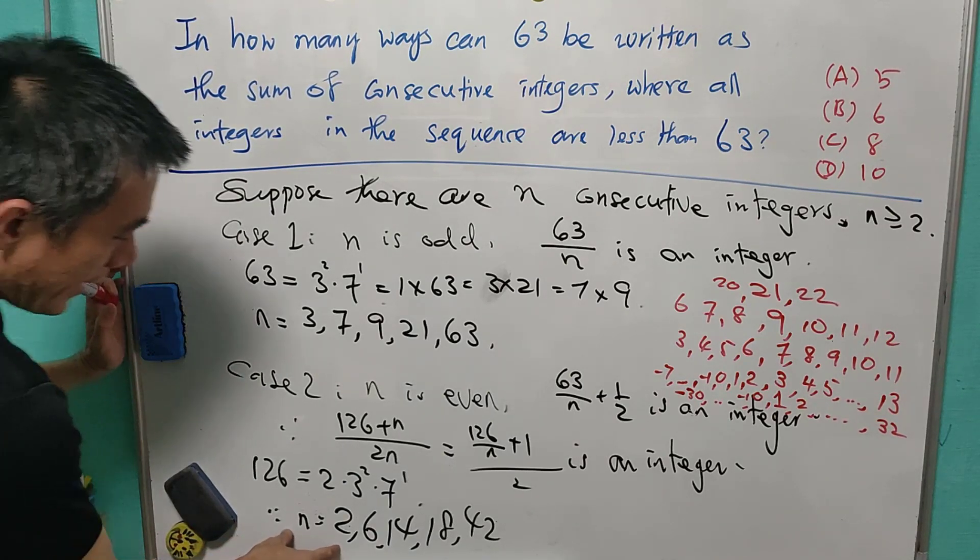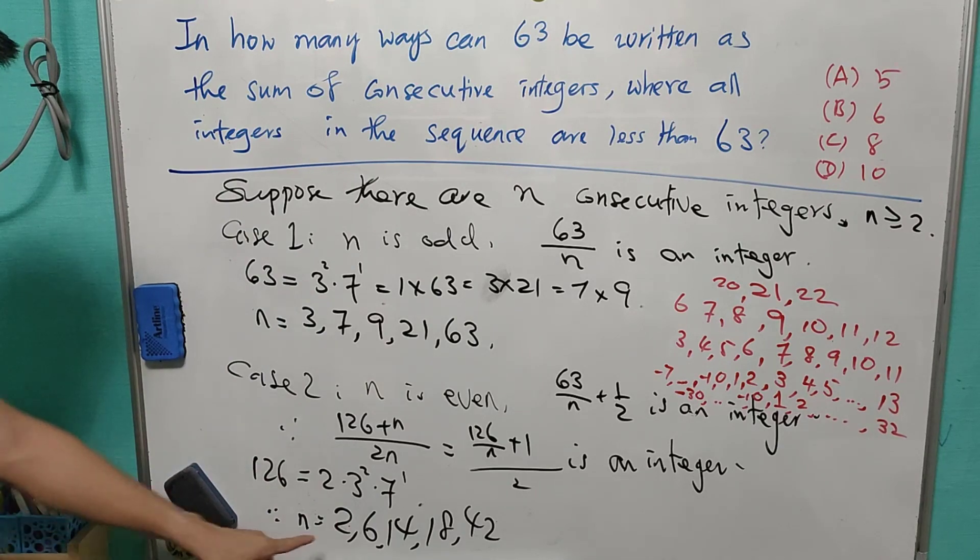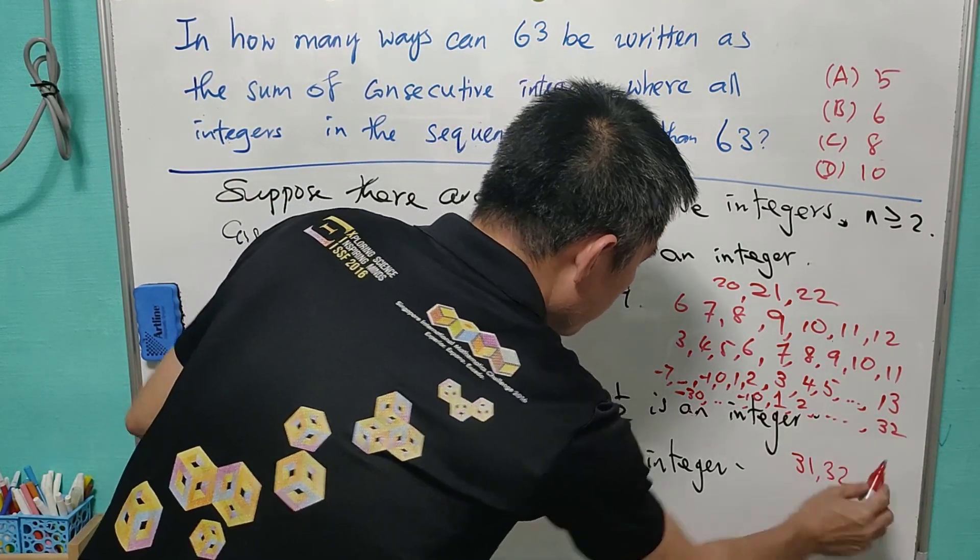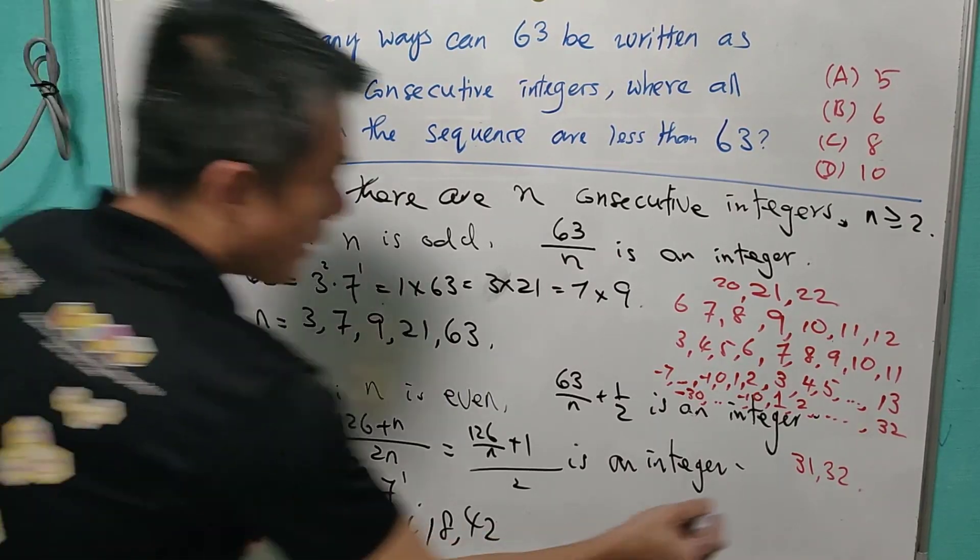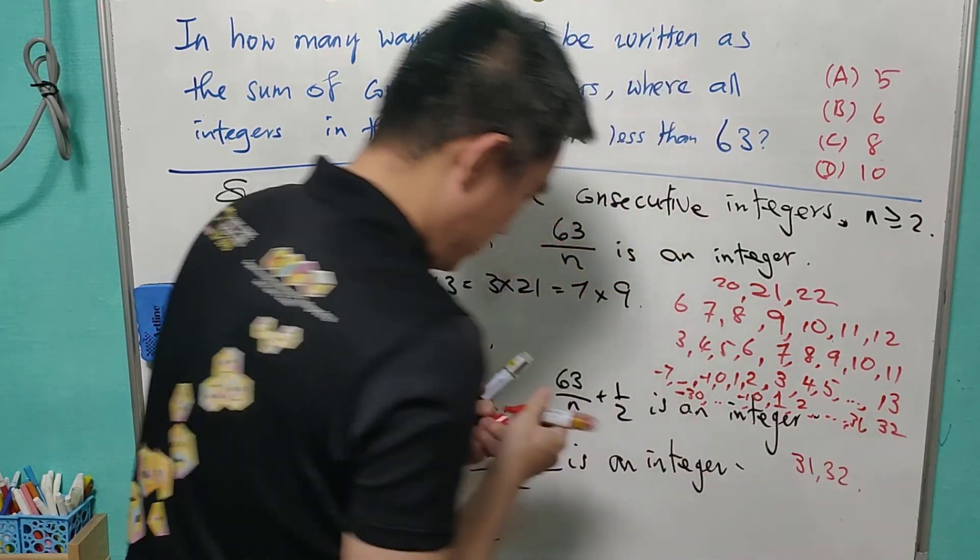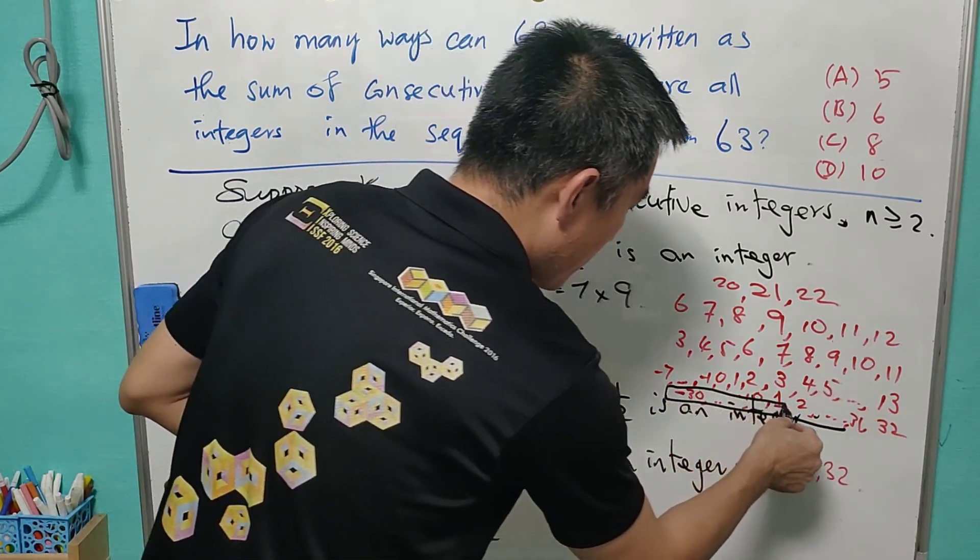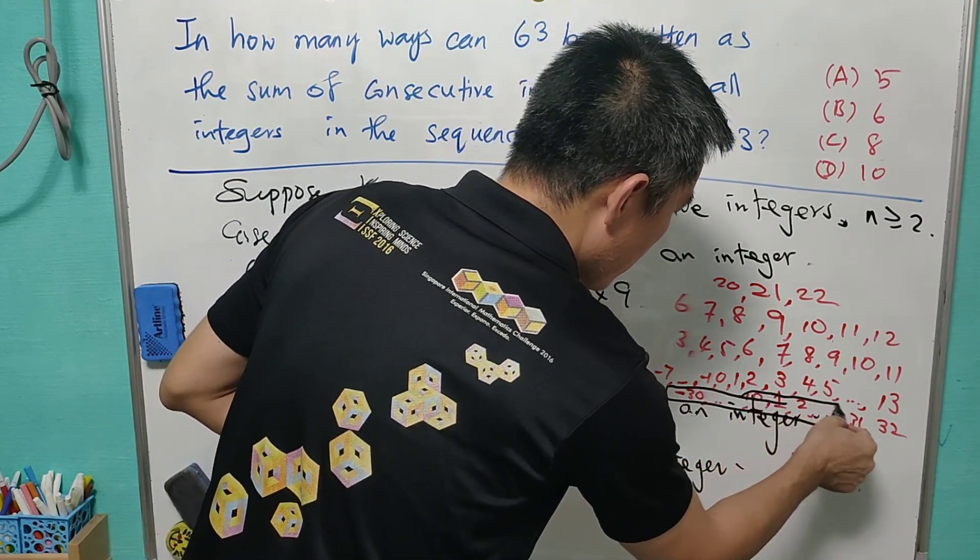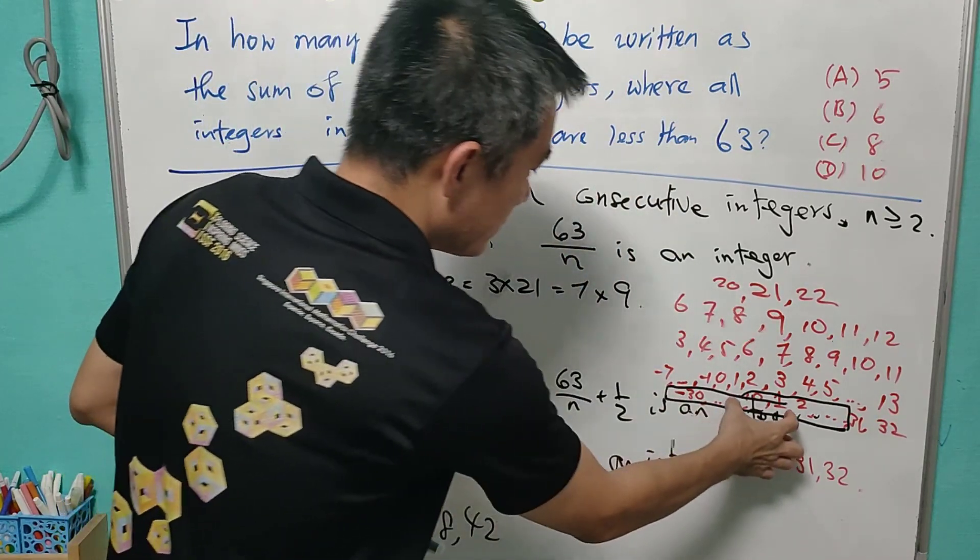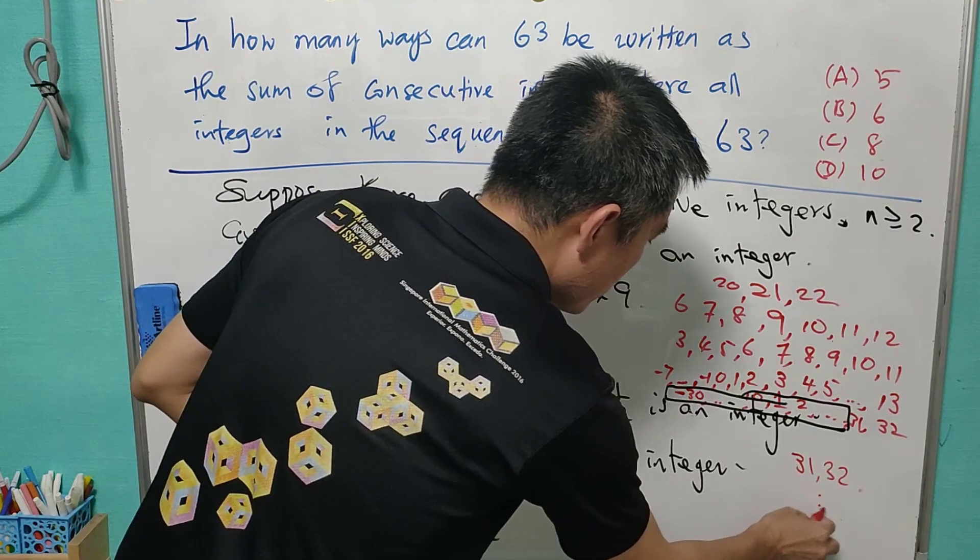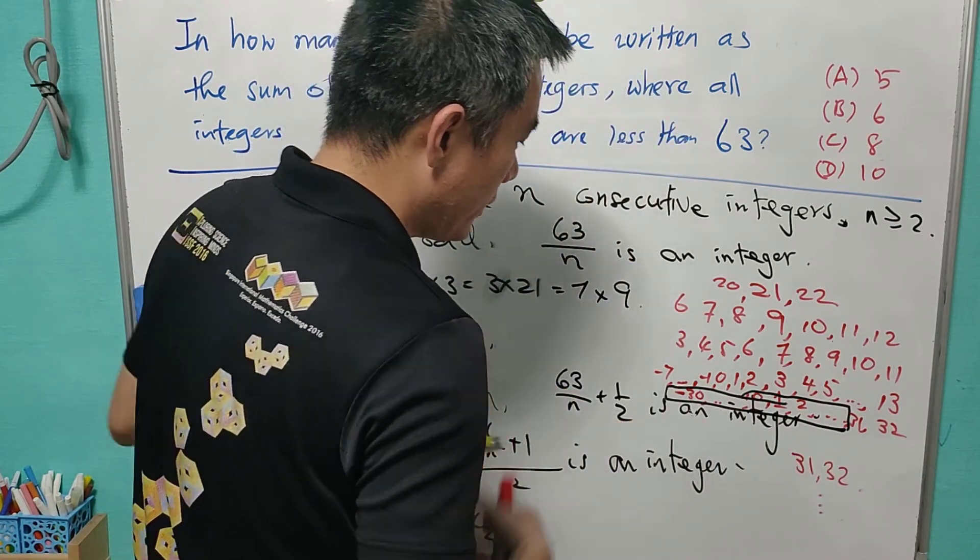What I'm trying to say here is, when n equals to 2, it is actually equal to 31 and 32. And the 31, 32 is actually similar to this form. Because the sum of all number here actually equals to 0. So for the rest, I'll show you in the next slide.